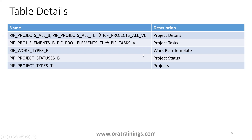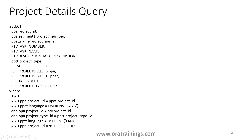You also have a work plan template which gets stored in PJF_WORK_TYPES_B. Similarly, project statuses are stored in the project status B table, and project types are stored in the project types TL table. Overall, if you want to pull simple project and task details, you can just join these couple of tables.